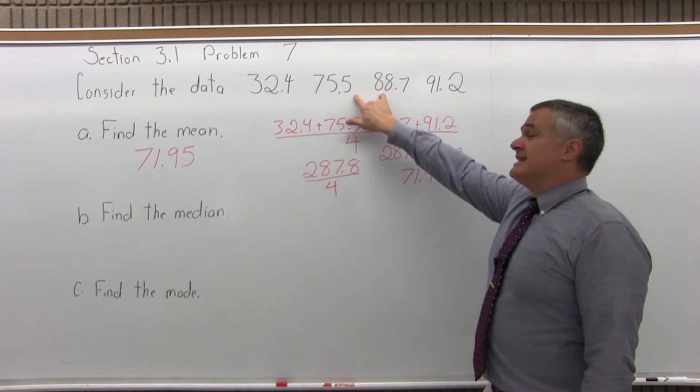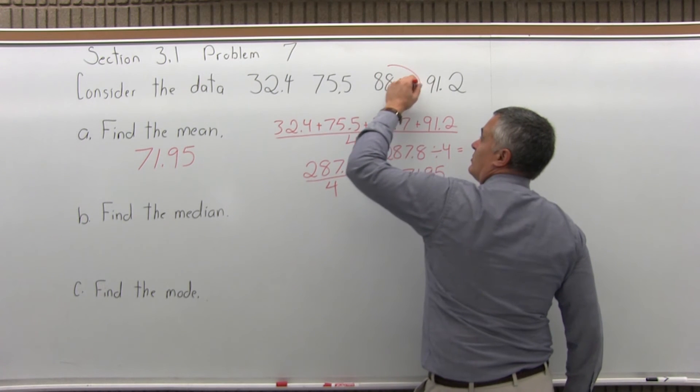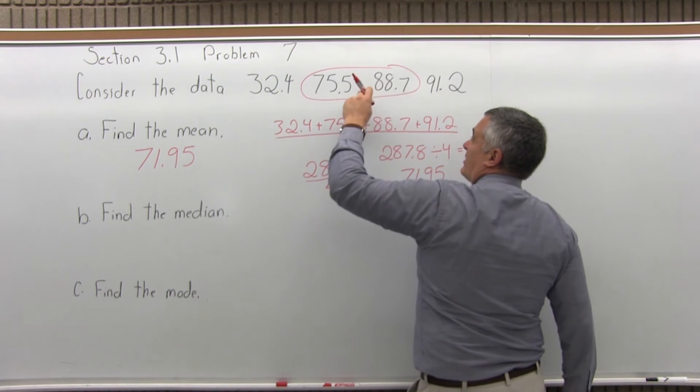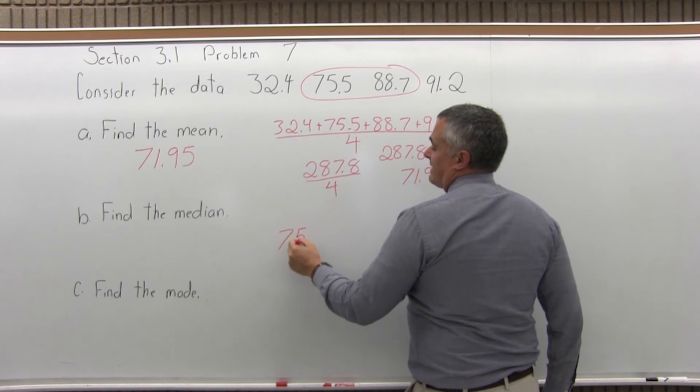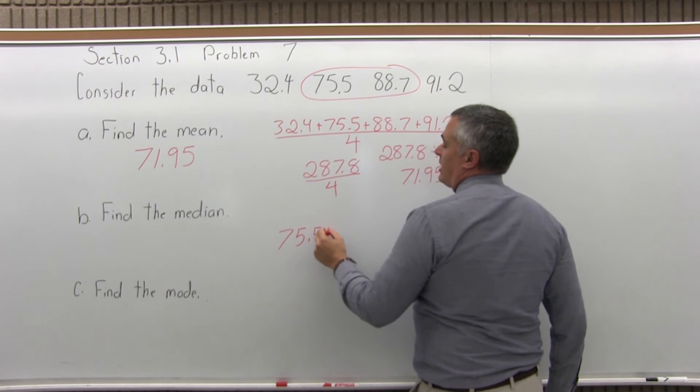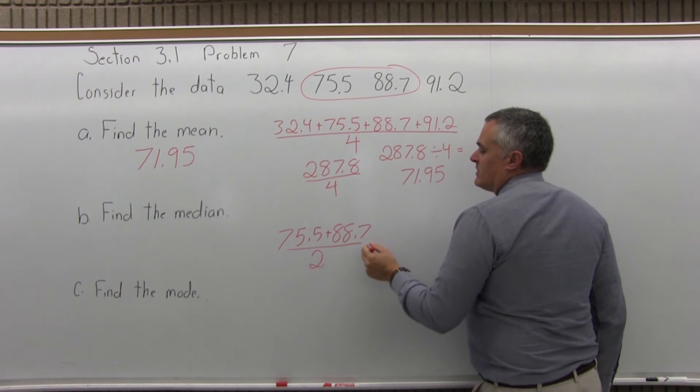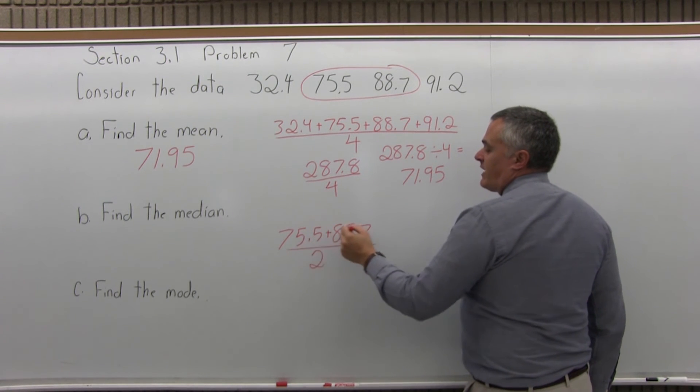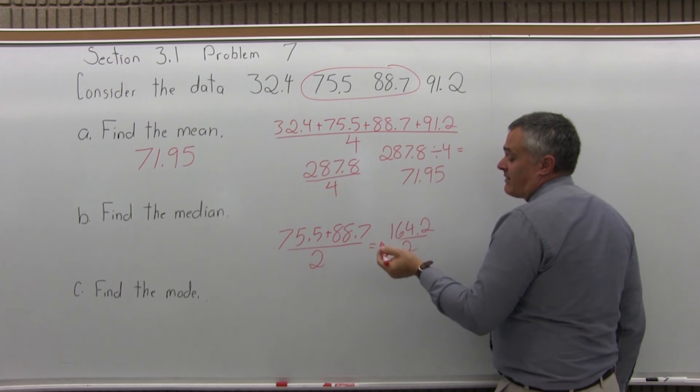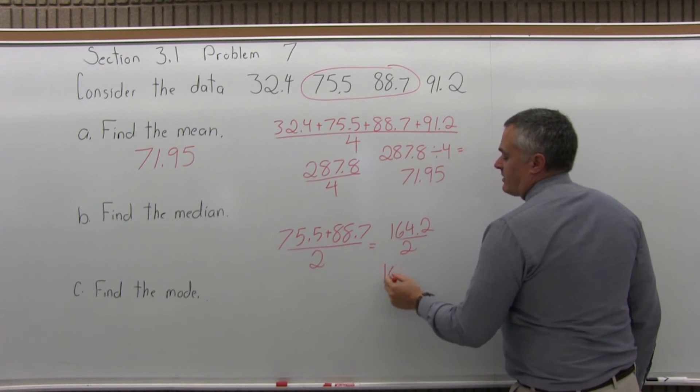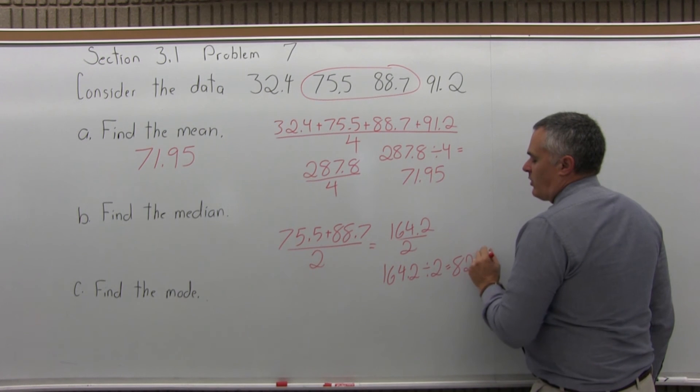4 is an even amount of data. The middle of the list is between the middle two data values, between 75.5 and 88.7. So for the median, I'll add 75.5 plus 88.7, and whatever I get as a result, I'll divide by 2 to find the midpoint. If you add the top, 75.5 plus 88.7, you would have 164.2, divided by 2. The calculator will do that very quickly for you.